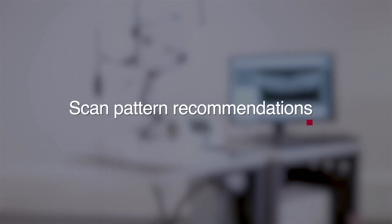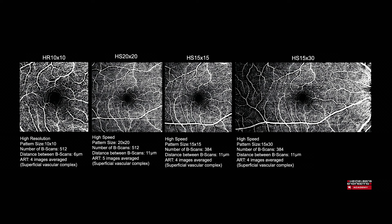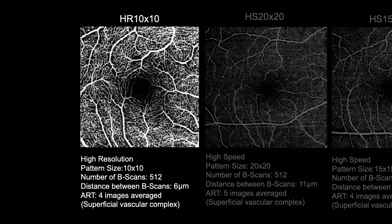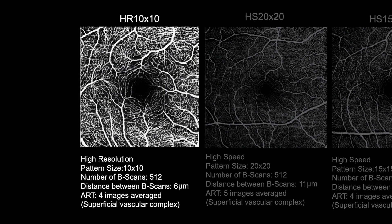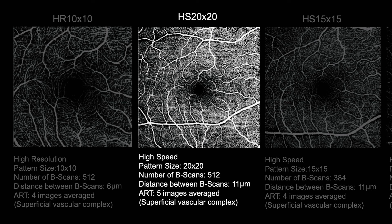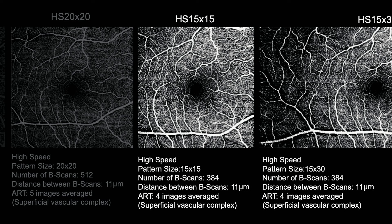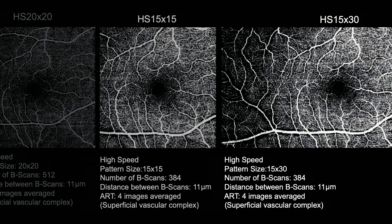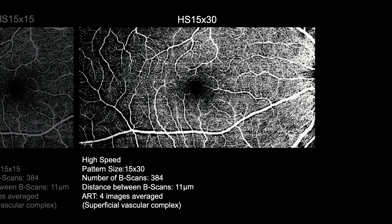Scan pattern recommendations. A number of predefined scan patterns are available on the Spectralis OCTA module. These include a high resolution 10 degree field of view and a high speed 20 degree field of view. Custom scan patterns can be created, and we would recommend including a high speed 15 degree and a high speed 30 degree scan pattern.